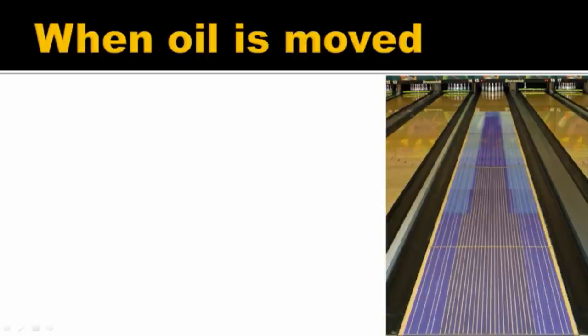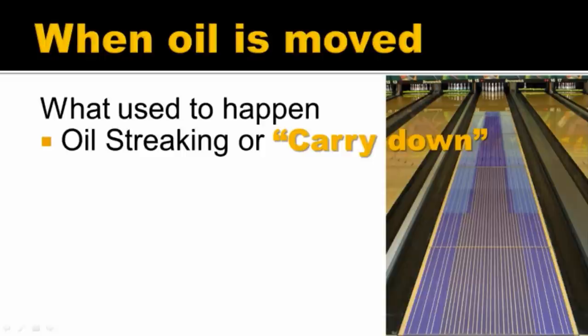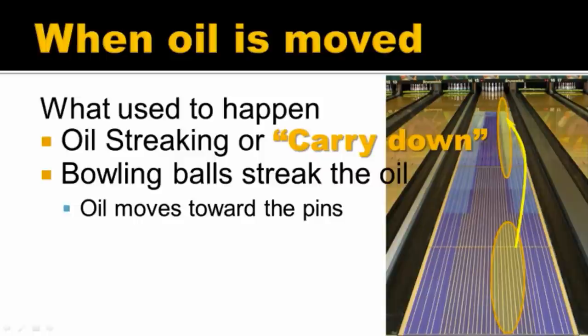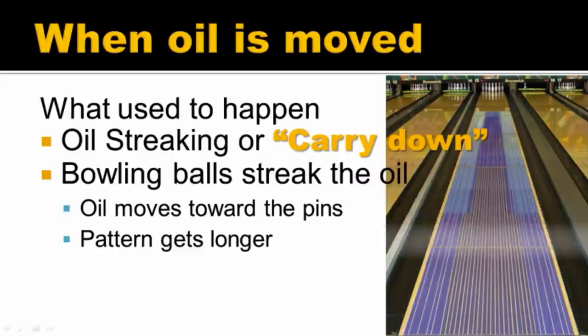Let's take a look at that, starting with oil moving. Now when oil is moved on the pattern — there's our pattern laid out on the bowling lane — what used to happen in the old days is that the oil would streak or carry down, and oil would be moved from the front to the back of the lane. This still happens a little bit. Bowling balls streak the oil: they pick the oil up from the front of the lane and move it down the lane as they travel. The oil moves from the front to the mid lane towards the pins, and it can even streak beyond the end of the pattern.